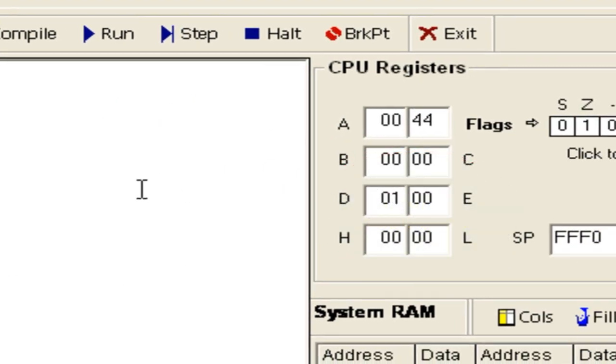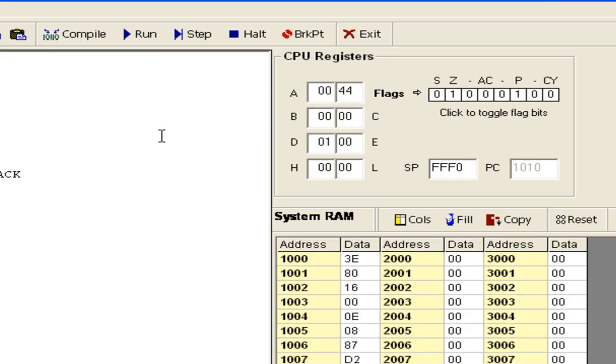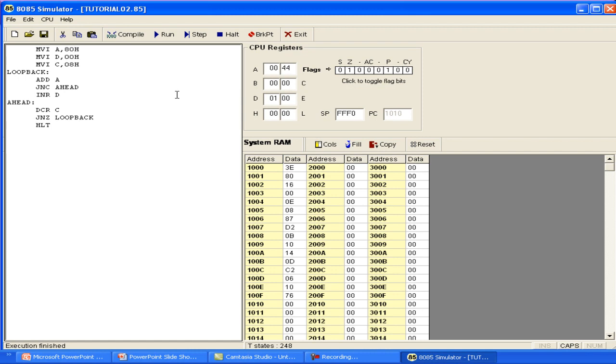So the program computes the number of 1s in register A. So whatever number you write in register A, the number of 1s in that 8 bit number is computed and reported in register D. That brings us to the end of the tutorial. Thanks for watching the tutorial.